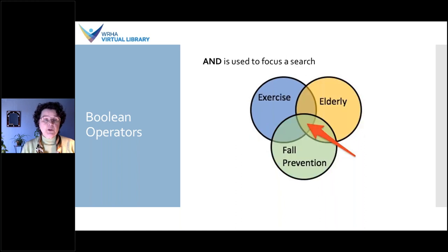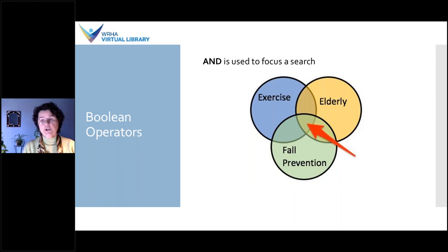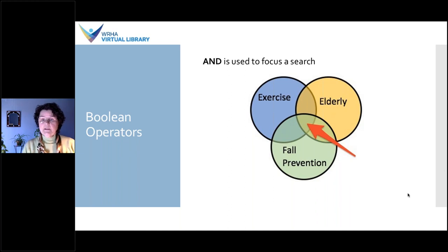AND is the other Boolean operator used to focus a search — you use it when you want the results to contain all the concepts important to your research. For example, searching for information on exercise by an elderly population as part of a fall prevention program, you would AND together elderly, exercise, and fall prevention. You'll get only what's in the intersection of all three circles — a very narrow search. Be careful not to have too many concepts because you may end up with zero results.